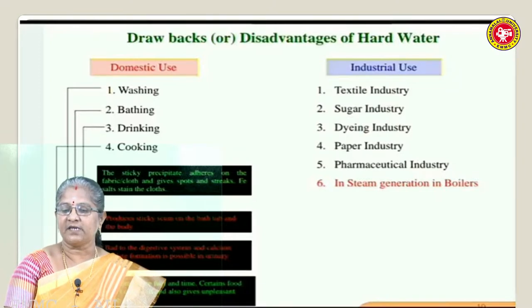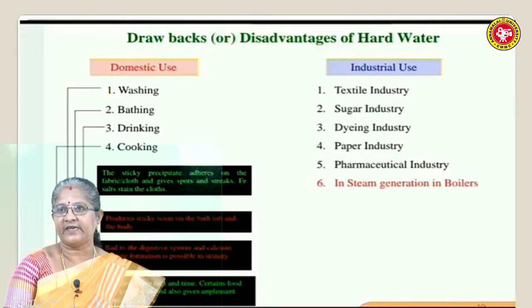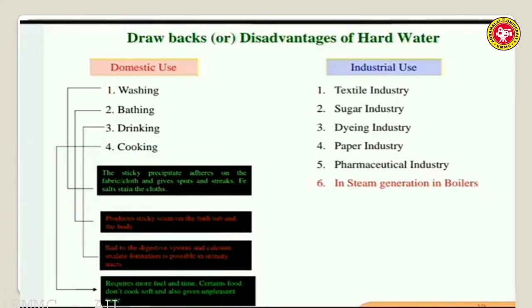If you use hard water for washing, the utensils or cloth will be stained because hard water has different types of dissolved salts in it. While bathing, soap will not lather easily - instead of getting foam you will get precipitate or scum. This is a great disadvantage of using hard water for bathing.